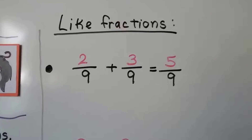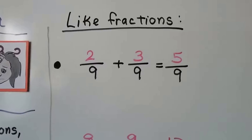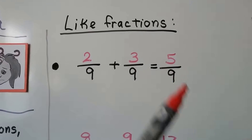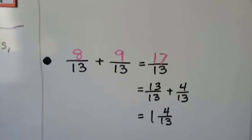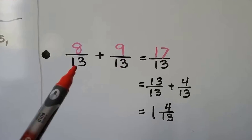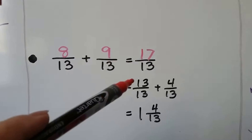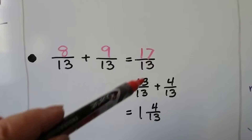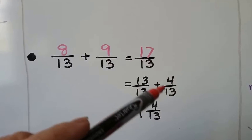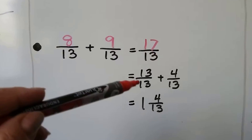When we have like fractions it's pretty easy — like fractions have the same denominator. These both have a denominator of 9, so we just add the numerators straight across: 2/9 plus 3/9 is 5/9. Now look at this one: 8/13 plus 9/13. They have the same denominator, so we add 8 plus 9 and get 17. But that's improper, so we pull out 13/13 — which equals one whole — and that leaves 4/13, giving us 1 and 4/13.